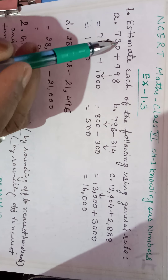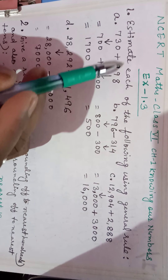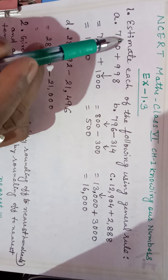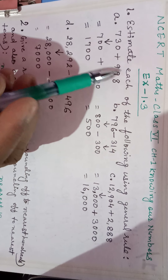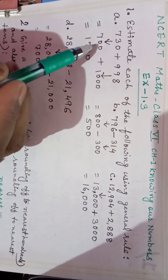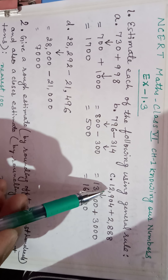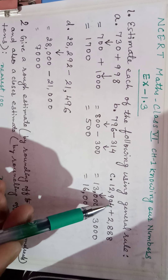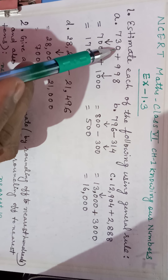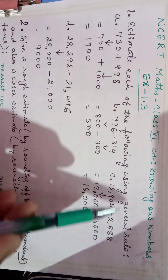Number A: 730 plus 998. We have to estimate using general rules. General rules means if the numbers are in hundreds, we will estimate in hundreds and round off to the nearest hundred. If four-digit numbers are there, you can round off to the nearest thousand or nearest ten thousand. So according to the given number of digits, you will round. This is the general rule.